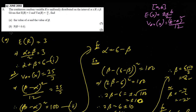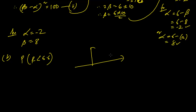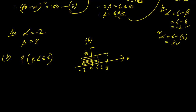For question (b), we need to find P(R < 6.6). For uniform distributions, always draw a sketch. The height of the PDF is 1/(beta − alpha) = 1/(8 − (−2)) = 1/10. The value 6.6 lies within the range, and we want the area from −2 to 6.6, which has width 6.6 − (−2) = 8.6.